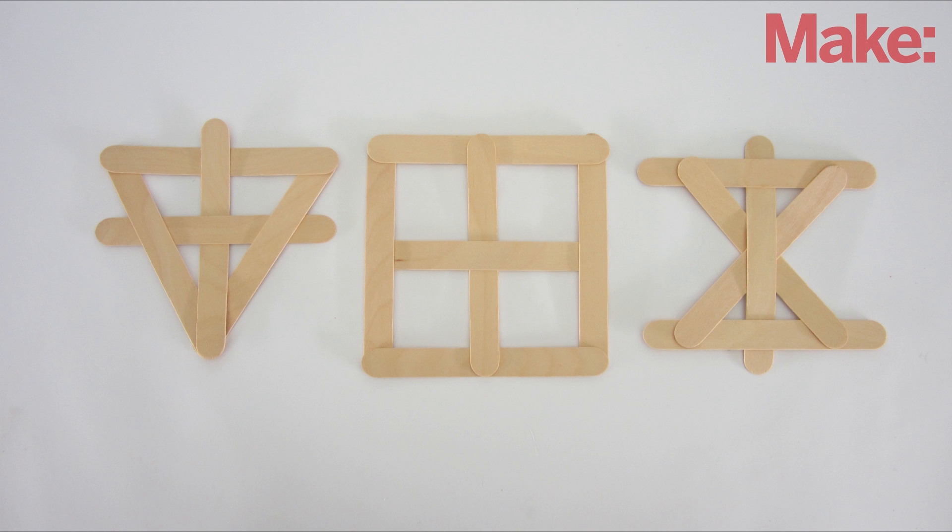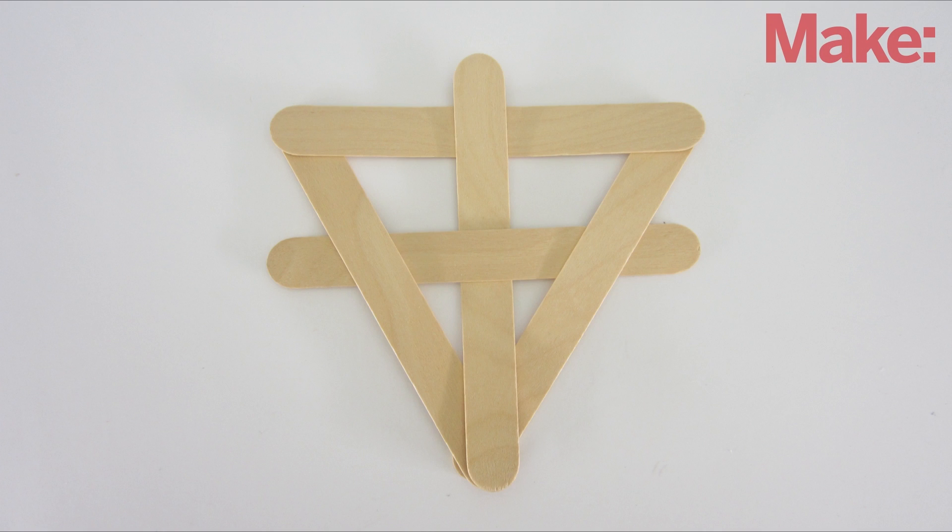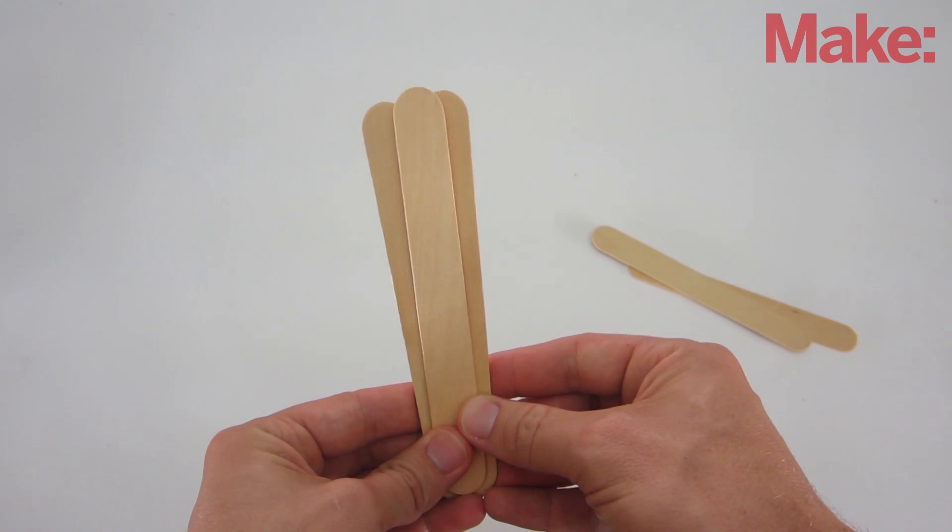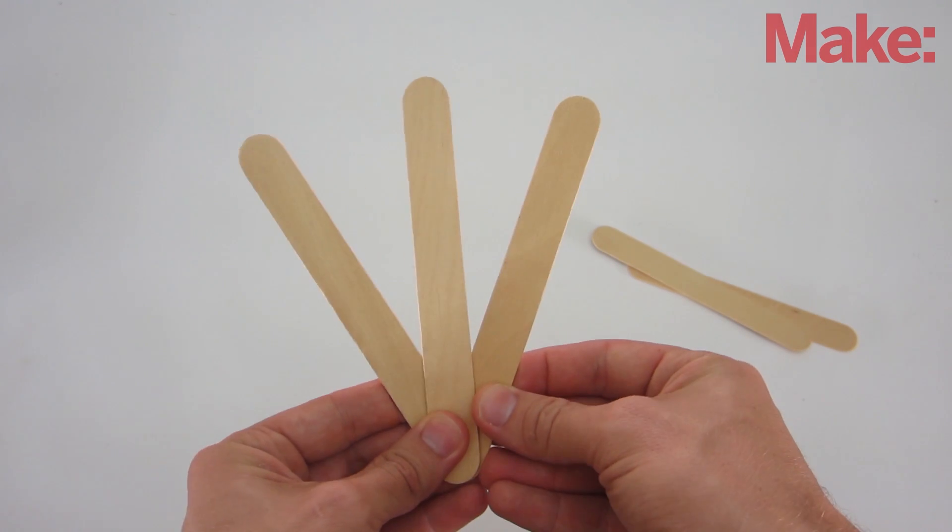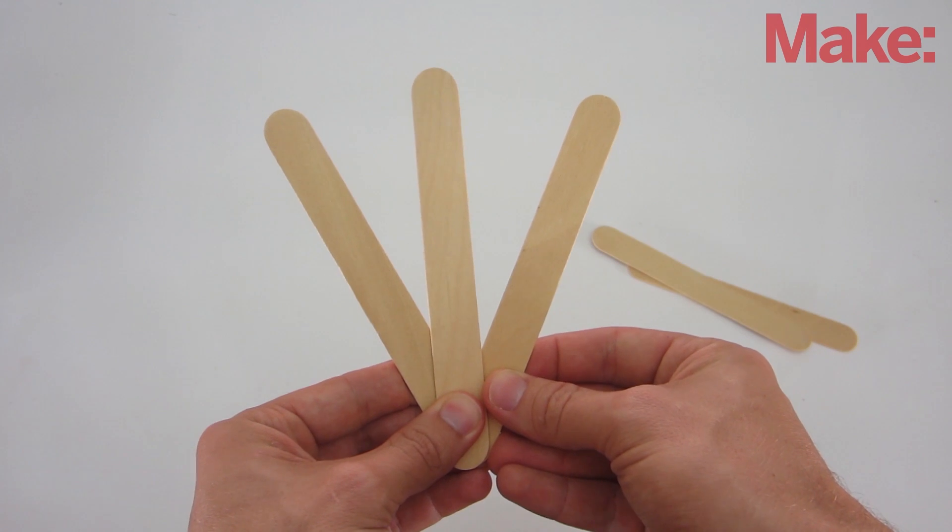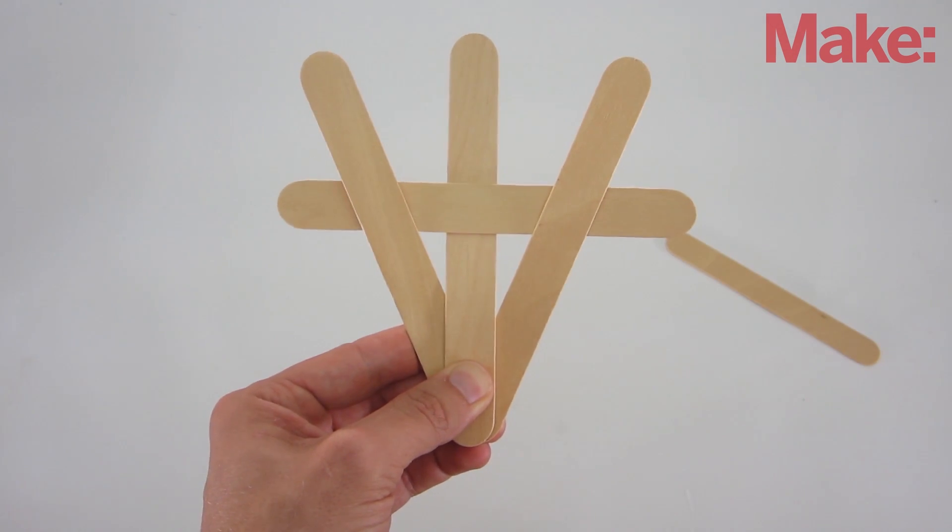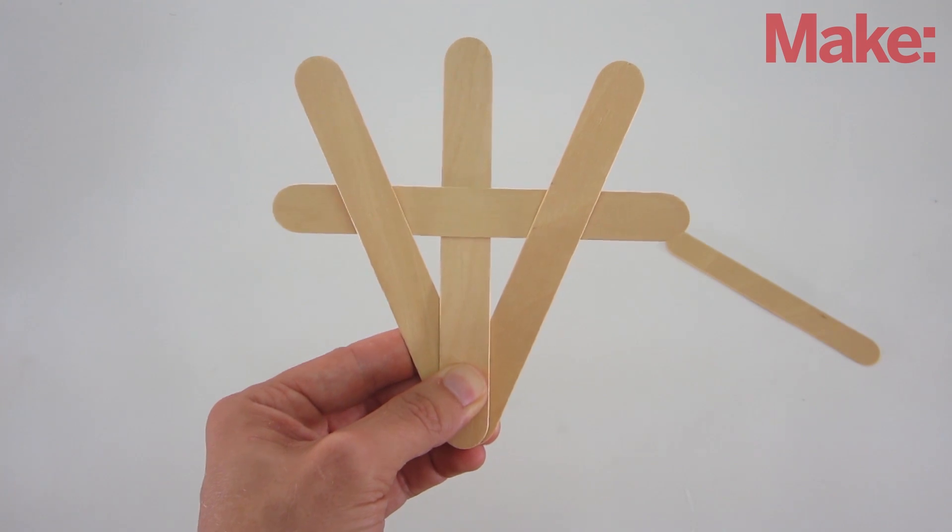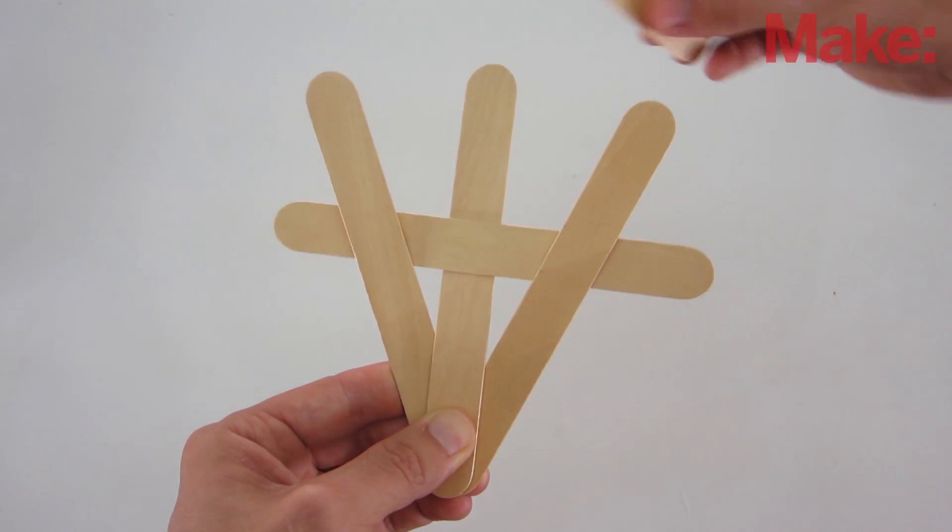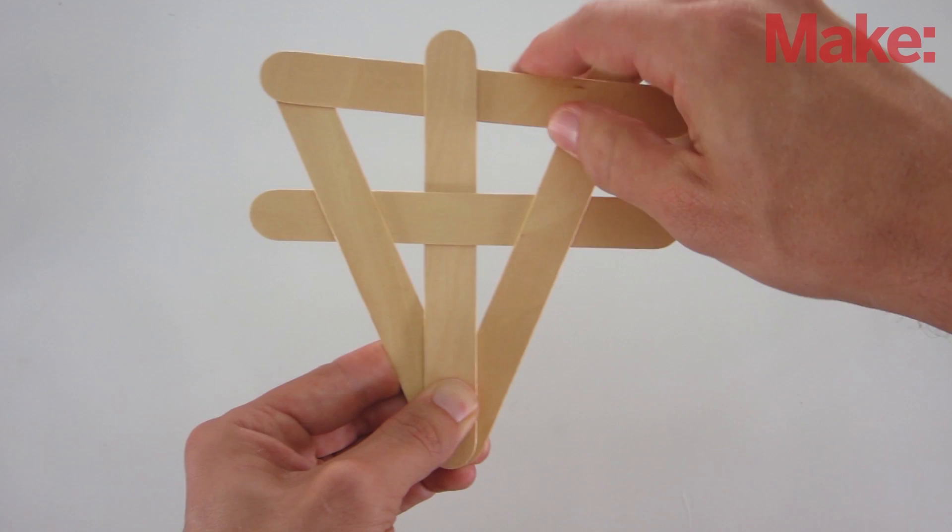Let's start by making some small single cell bombs. The most common configuration is the triangle bomb. To make it, take a stack of three sticks and fan them out with a center stick on top. Now insert a horizontal stick that goes over the center stick and under the two side sticks.